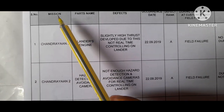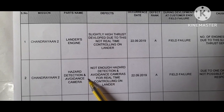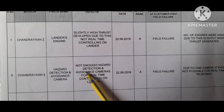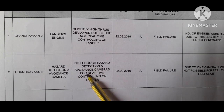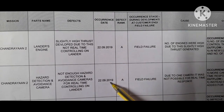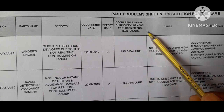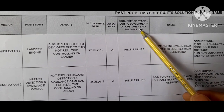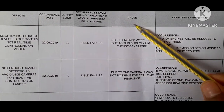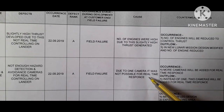Now the second problem: mission is also Chandrayaan 2. Part name is hazard detection and avoidance cameras. Defect: not enough hazard detection and avoidance cameras for real-time controlling on the lander. Occurrence date is given here, defect rank also given, and the occurrence stage is a field failure. Cause: due to only one camera, real-time maneuvering was not possible.